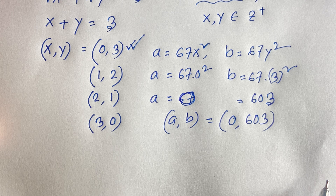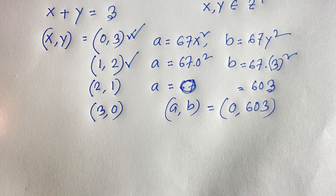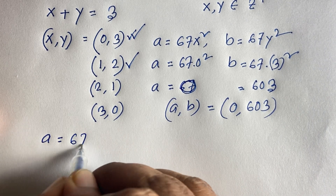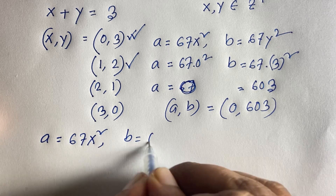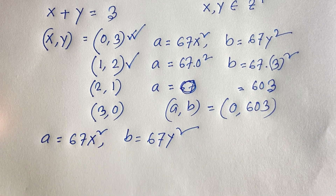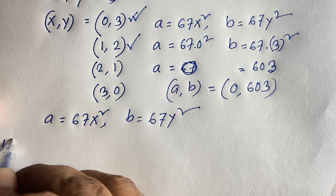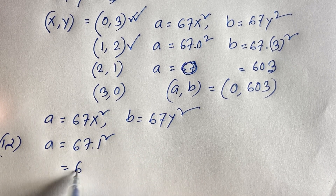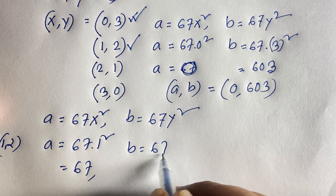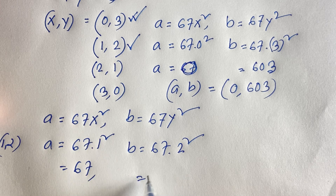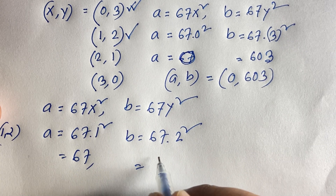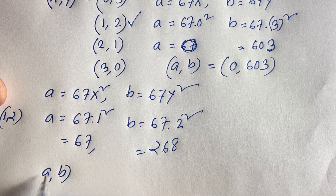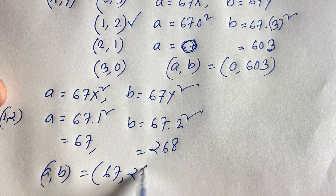For the second case, x = 1 and y = 2: a = 67 × 1² = 67, and b = 67 × 2² = 67 × 4 = 268. So (a, b) = (67, 268).